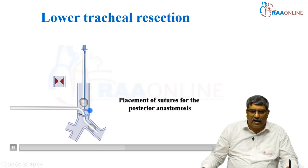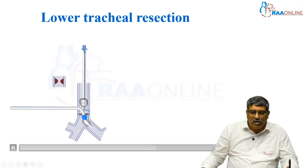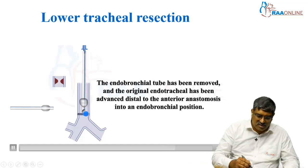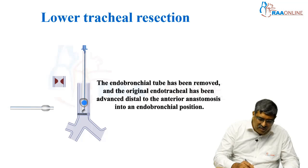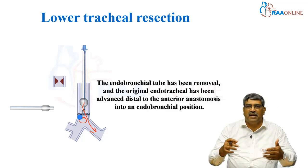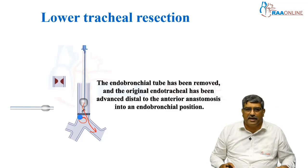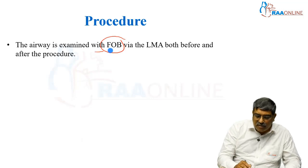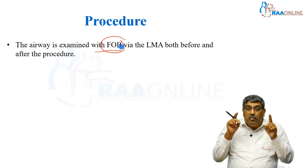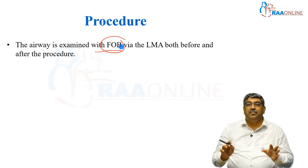You do the posterior anastomosis first. Once the posterior anastomosis is done, the endobronchial tube is removed and then the anterior anastomosis is done. Once anterior anastomosis is done, this tube can be advanced past the stenosis into the left main stem bronchus and ventilated, or passed beyond the anastomosis and used to ventilate. The airway is examined with fiber optic bronchoscopy via the laryngeal mask airway both before and after the procedure.